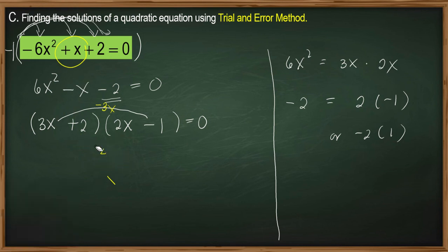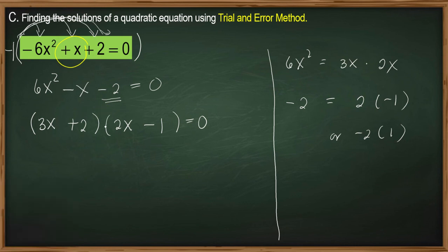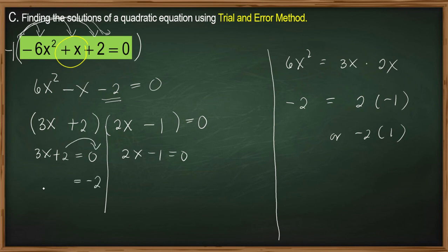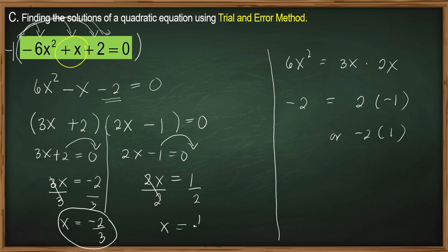We apply the zero product property. We have 3x plus 2 equal to 0 and 2x minus 1 equal to 0. Transpose positive 2 to get negative 2; we have 3x equals negative 2. Divide both sides by 3, so x is equal to negative 2 thirds. For the other factor, transpose negative 1 to get positive 1. We have 2x here, so divide both sides by 2. x equals 1 half. These are the solutions of this quadratic equation.